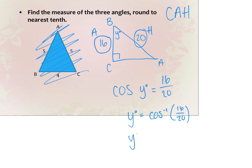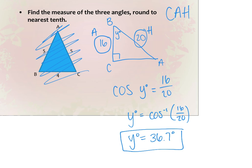Why use cosine here and not sine? Do we know the side opposite Y? No. Tangent and sine both use opposite. We can't use them because we don't know the opposite side. But we know adjacent and hypotenuse, so we have to use cosine.